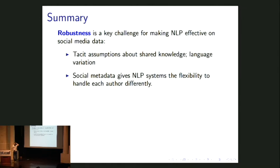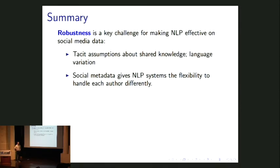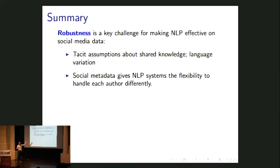To wrap up: robustness — especially to new domains and variation — is really the key challenge for making NLP effective on social media data and all domains outside where most labeled data comes from, which is news text. The two things that make it difficult are tacit assumptions about what the audience knows, which journalists are trained not to make but the rest of us make freely, and language variation — people want to use all kinds of writing styles and NLP has to work for all of them. In this talk I focused on using social metadata, which in places like Twitter we can get, to handle both problems.